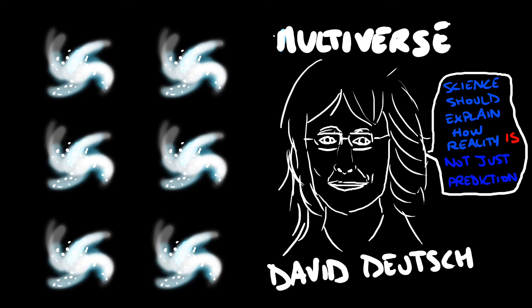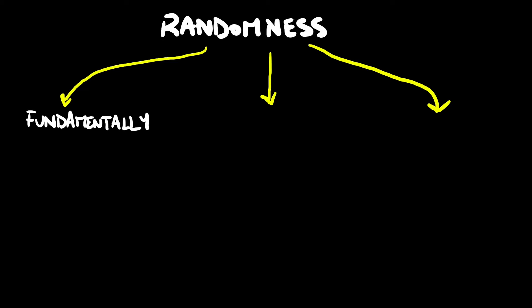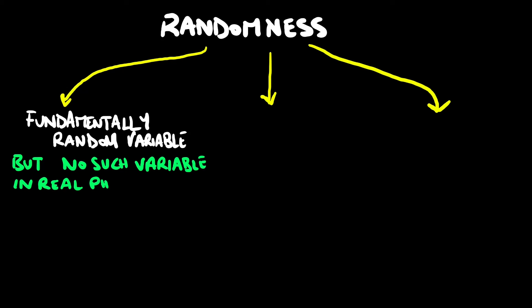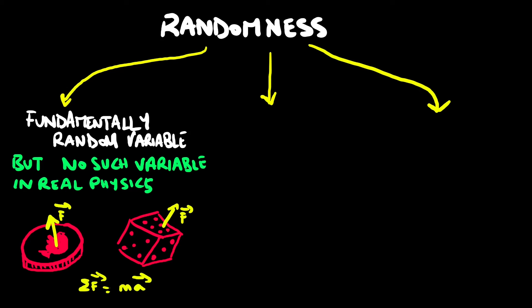So let's first consider the concept of randomness. A phenomenon could appear unpredictable to observers for one or more of three reasons. The first is that it is affected by some fundamentally random variable. However, there are no such variables in real physics. Even for a coin flip or a dice roll, if you knew exactly the forces applied to it, according to laws of physics, you would know exactly the outcome.